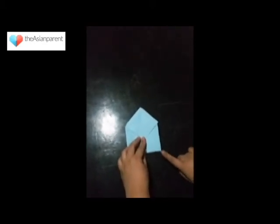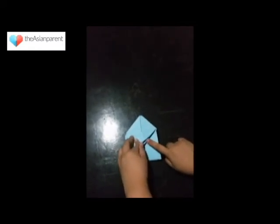Then you get these corners. And fold it into the triangle, inserting it into the flap.